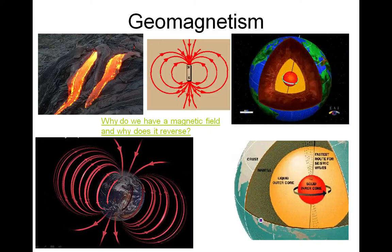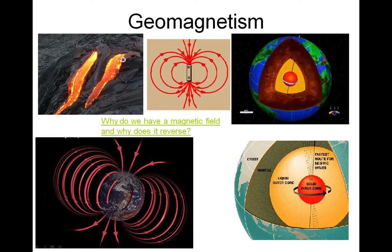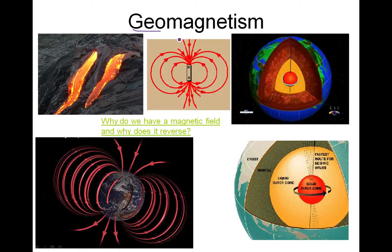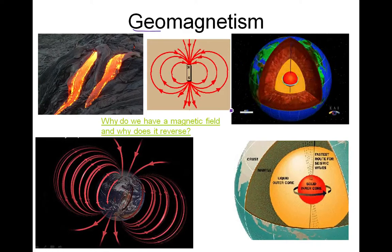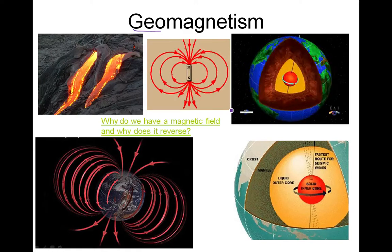Before we do that, we need a quick lesson on geomagnetism, since you might not know. Geomagnetism is just the magnetism of the Earth. Why does the Earth have a magnetic field? The simple answer is the Earth has a magnetic field because the inner core spins faster than the rest of the Earth. That's why we have a magnetic field.